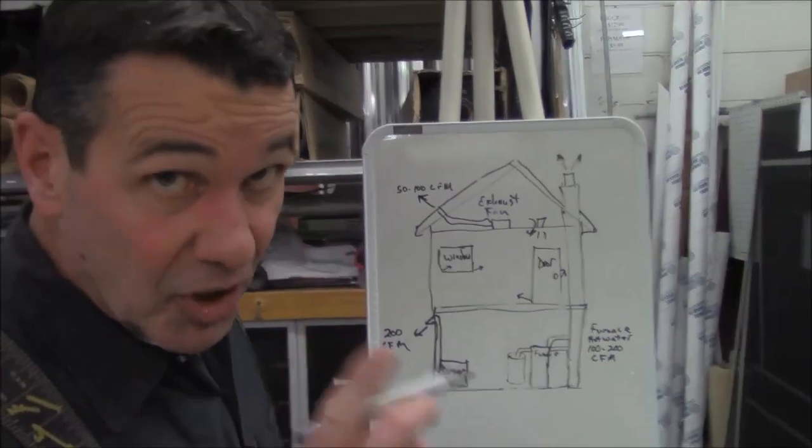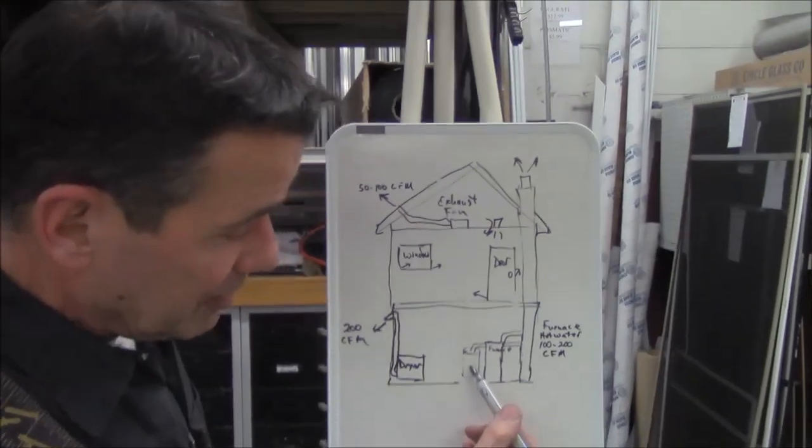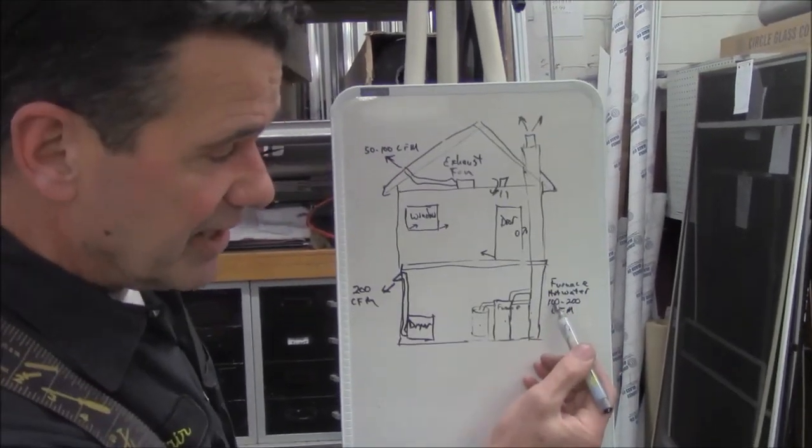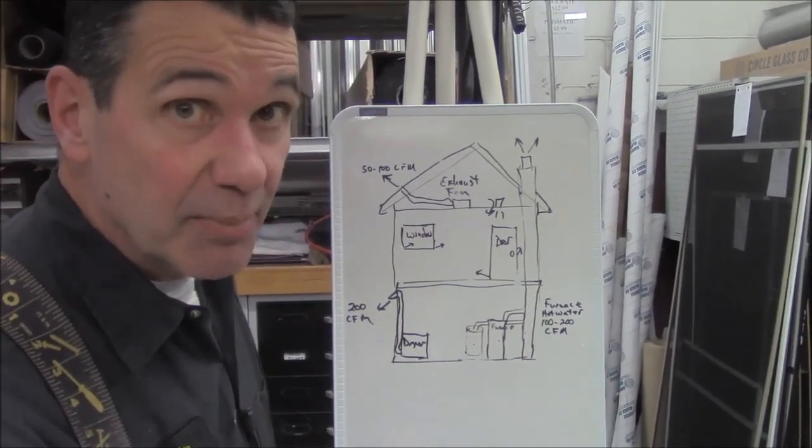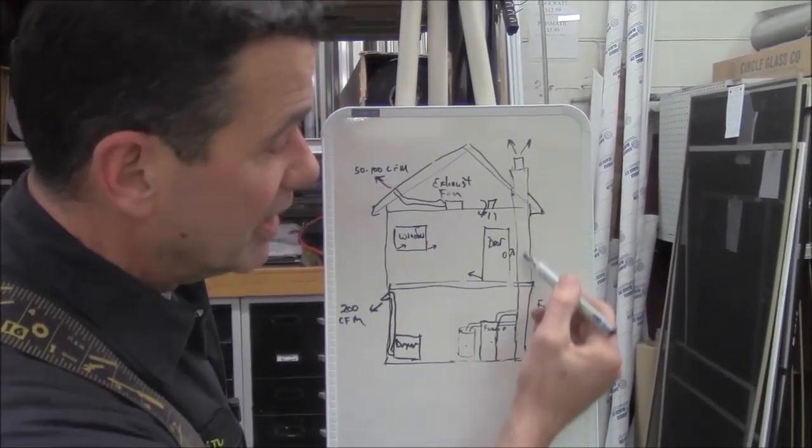Well, what happens is, here's some of the causes of negative air. I have a hot water tank and a furnace. They are both sending anywhere from 100 to 200 CFMs, cubic feet per minute, of air out our chimney.